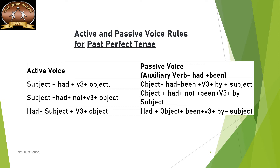In passive voice, the object comes in the subject's place and the subject goes to the object's place. We have 'had been' — the same rule which applied for present perfect where we write 'has been' or 'have been' and V3 form of verb. Here also the same thing: 'had been' and V3 form of verb, whereas the V3 form of verb is already there in active voice. You just need to add 'been' — B-E-E-N.